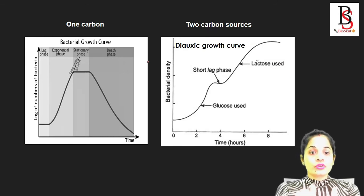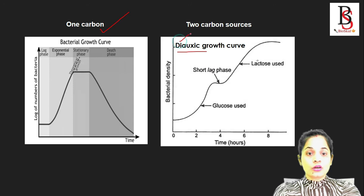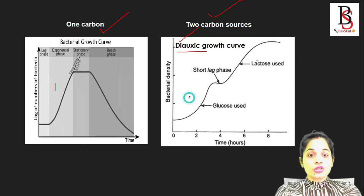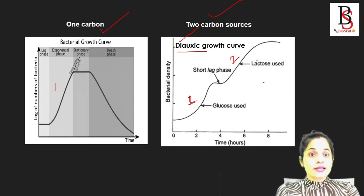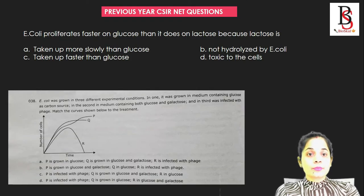Now let's compare the bacterial growth curve with the diauxic growth curve. In the bacterial growth curve, bacteria use only one carbon source, whereas in the diauxic growth curve they use two carbon sources. In the bacterial growth curve, you observe only one exponential phase, whereas in the diauxic growth curve you observe two exponential phases intermitted by a lag phase. In the diauxic growth curve, if glucose is present in the media, it will be utilized first, then bacteria will go for the other carbon source.